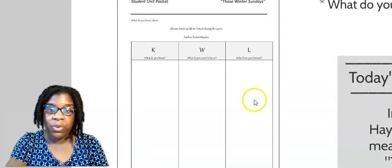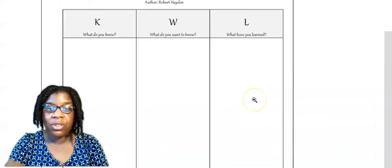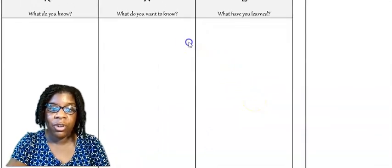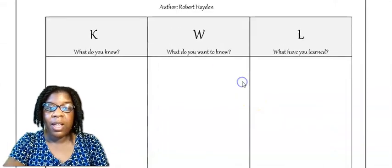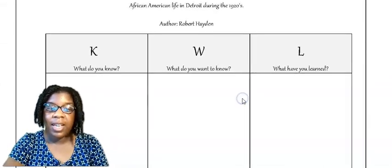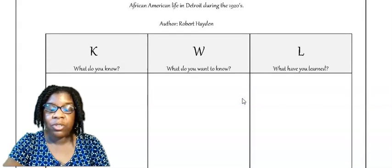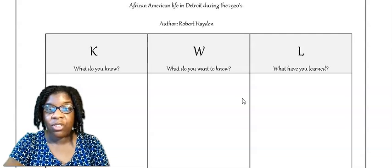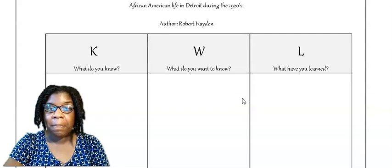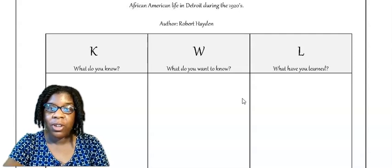The first graphic organizer in your student unit packet is the KWL chart. In the K column, it says, what do you know? Take time right now to write one thing you know about African-American life in Detroit during the 1920s. Now write one thing you already know about the author, Robert Hayden.